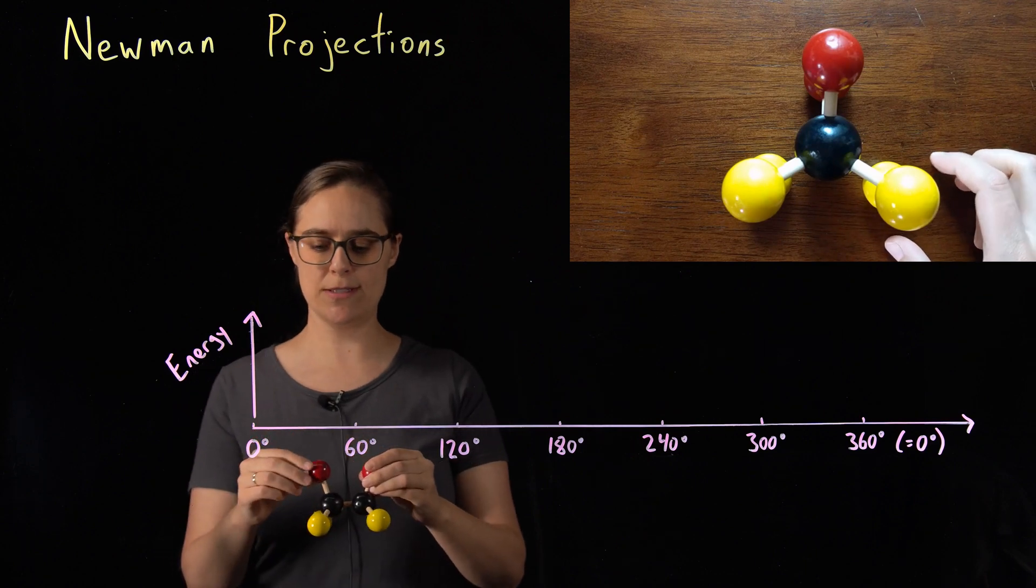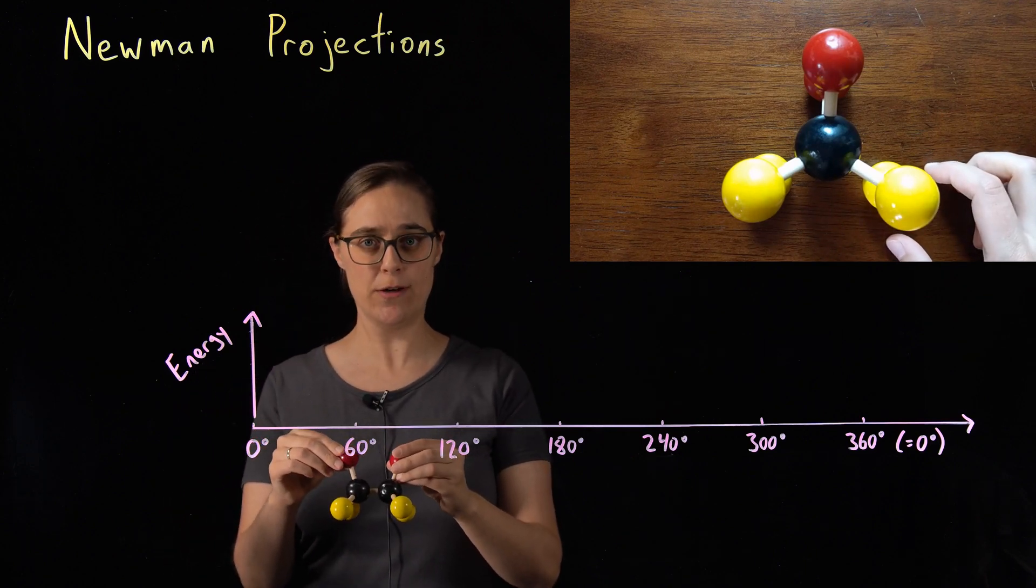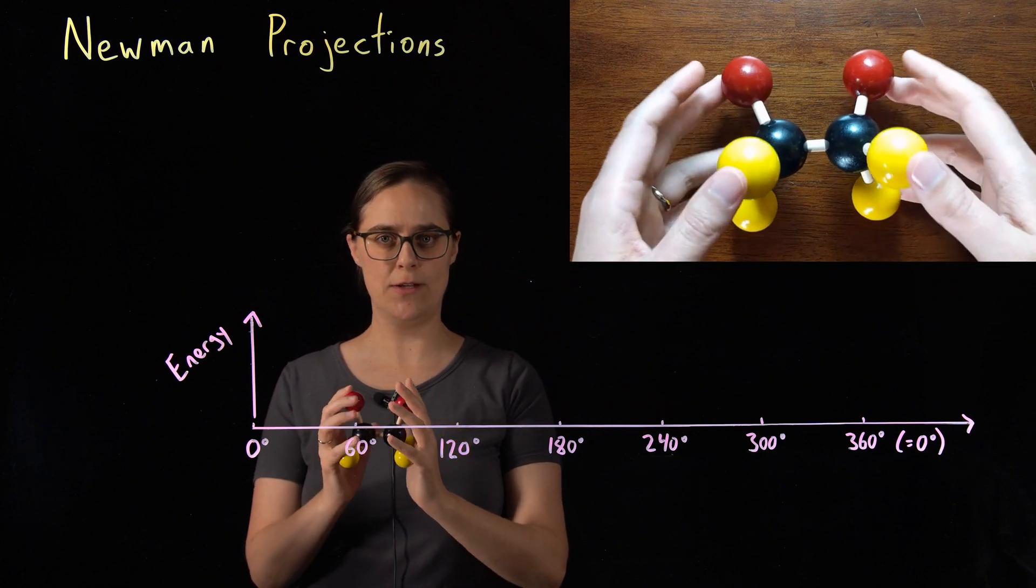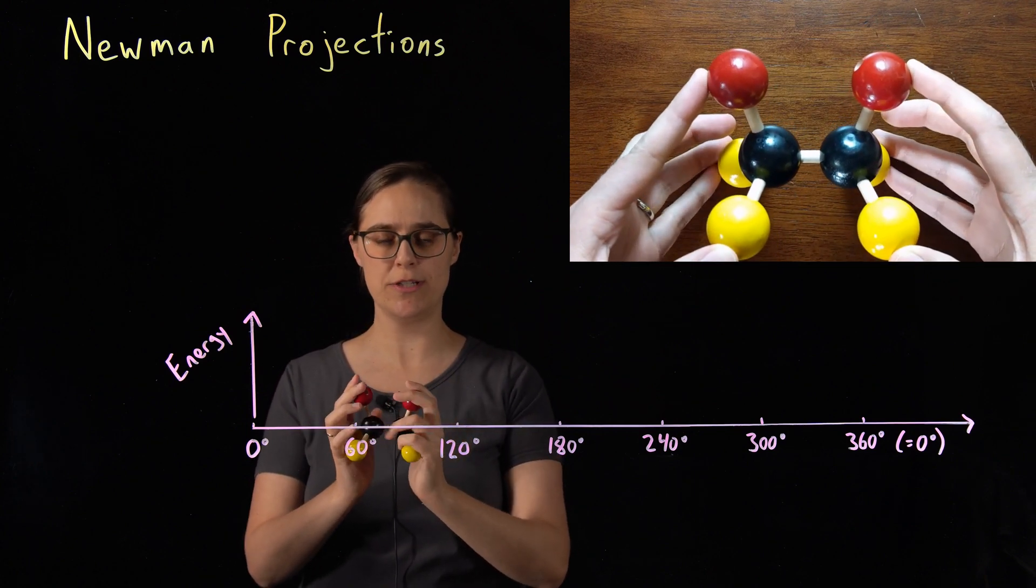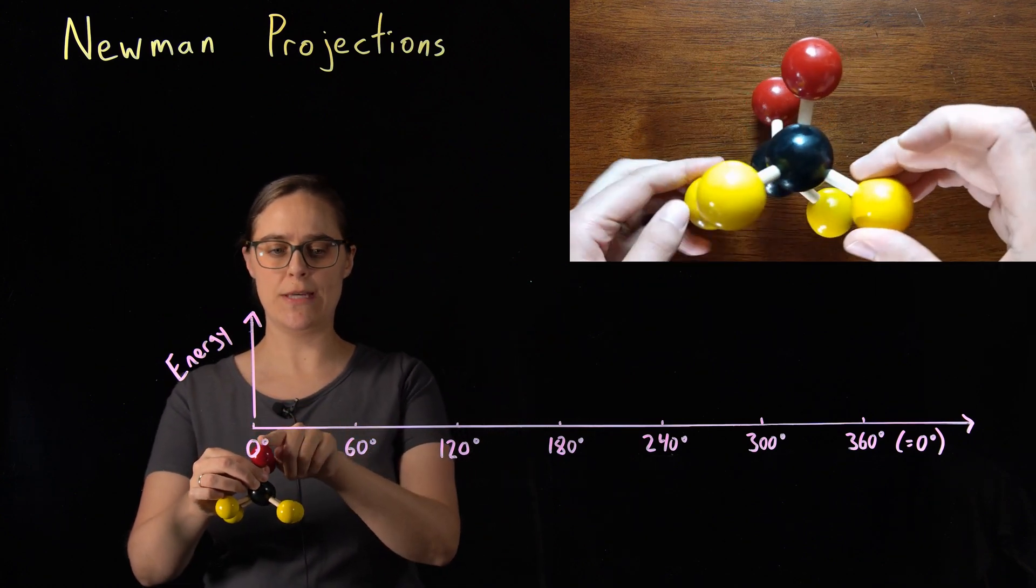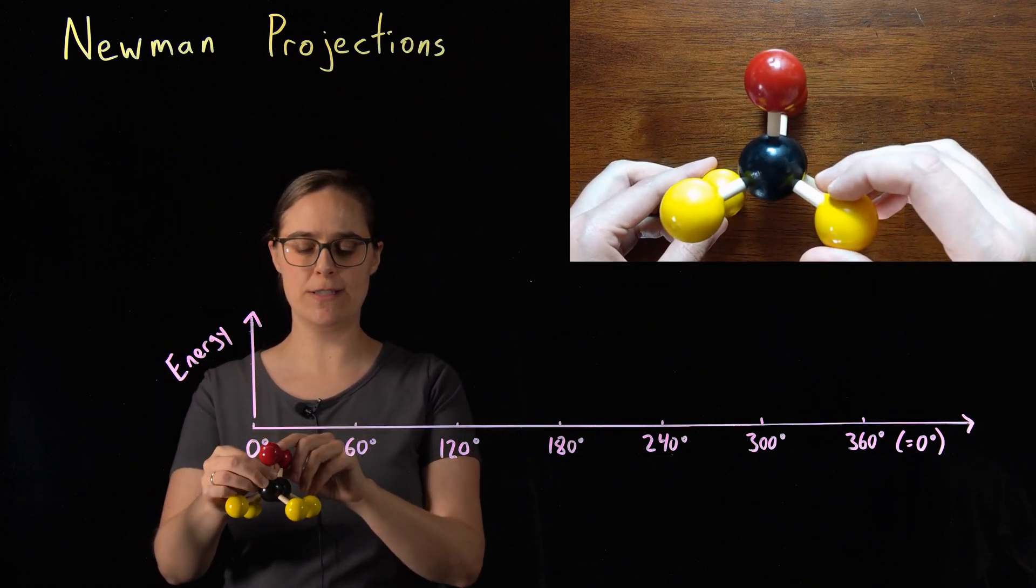So I have replaced one yellow hydrogen on each carbon with a red hydrogen. This is not intended to be any sort of chemical change. These are all still hydrogens. I just want a marker so we can talk about how far this has been rotated.